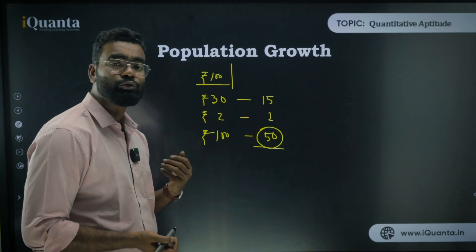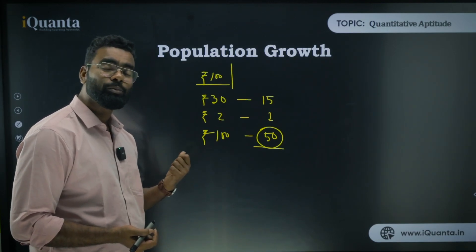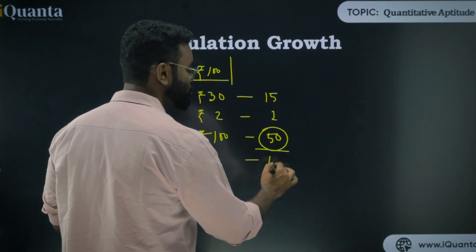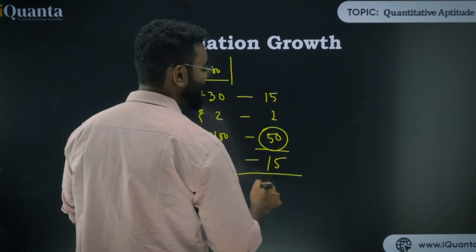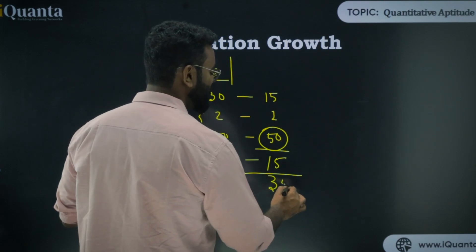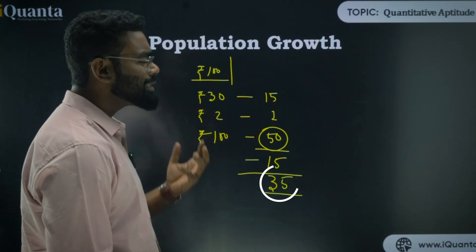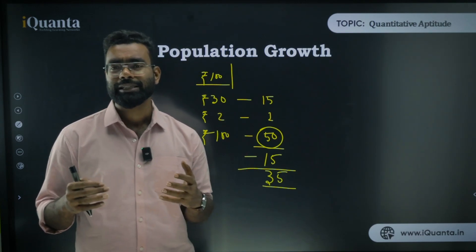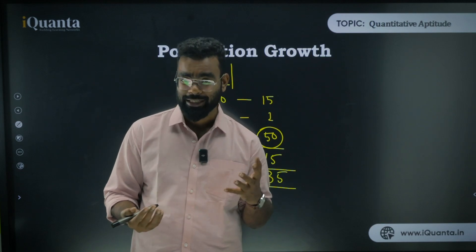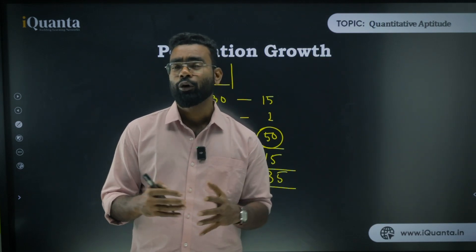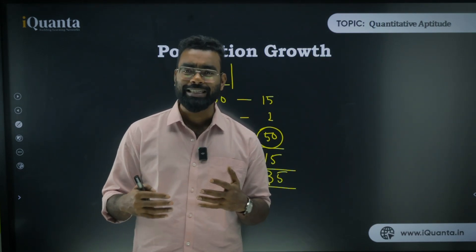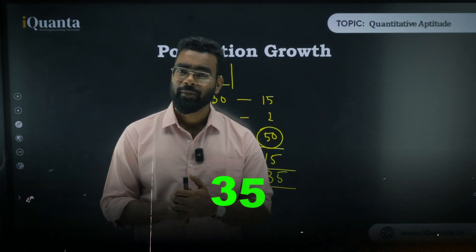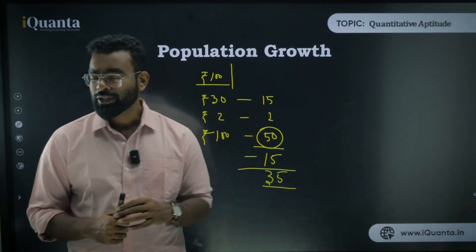But the question is how many mangoes he used to buy previously. Previously he used to buy 15 less, so he used to buy 35 mangoes. Hence the answer is 35. This is a very tricky question — a lot of people incorrectly choose 50, but the right answer is 35.